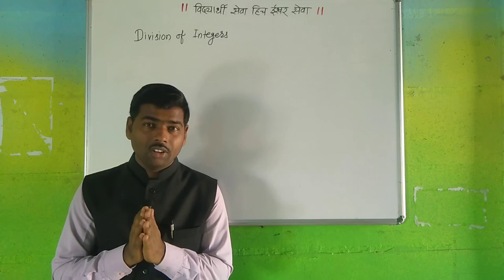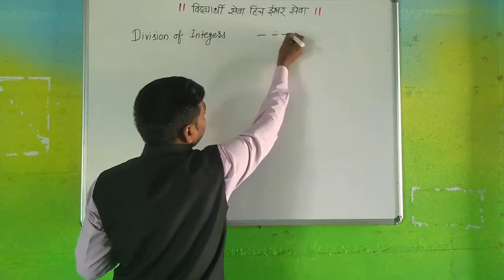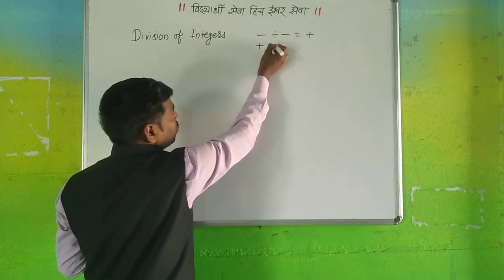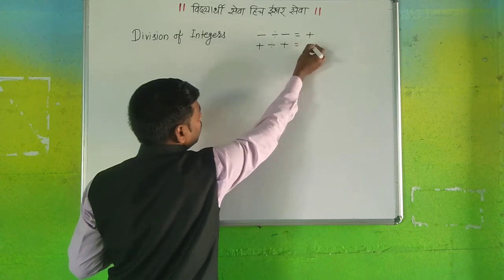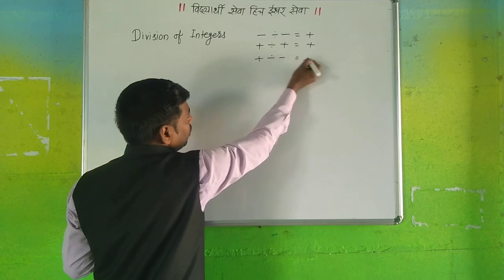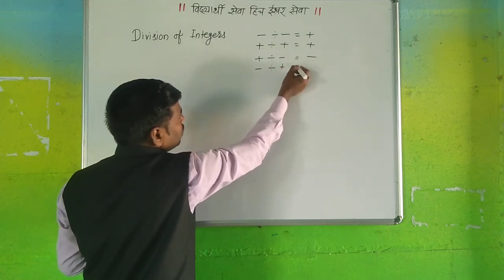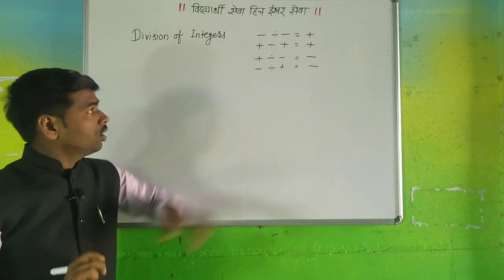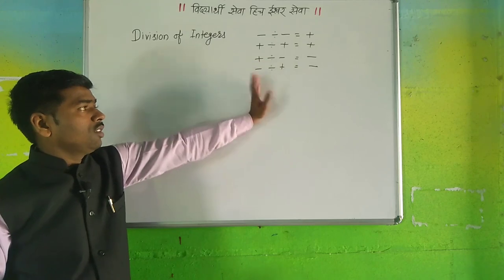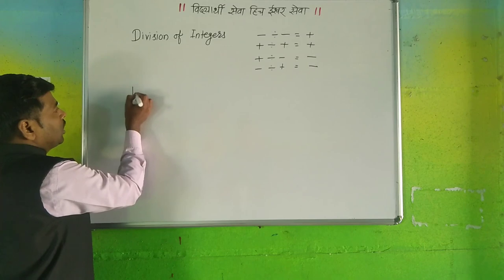Today we are going to learn the sign rules for division. Negative divided by negative is equal to positive. Positive divided by positive is equal to positive. Positive divided by negative is equal to negative, and negative divided by positive is equal to negative. The rule is: same signs give positive, different signs give negative.